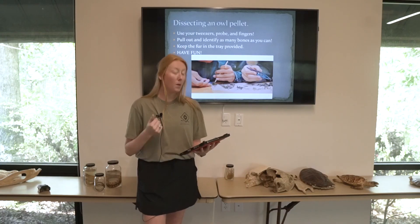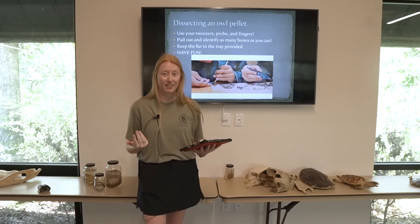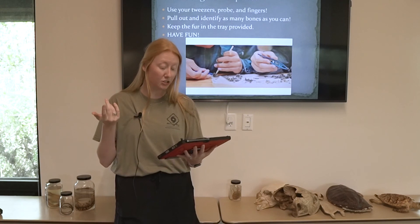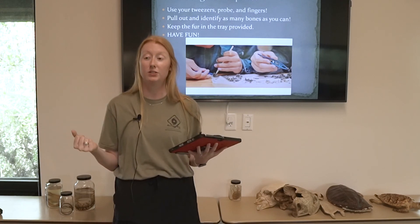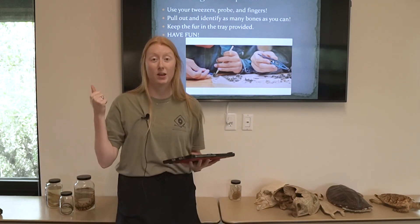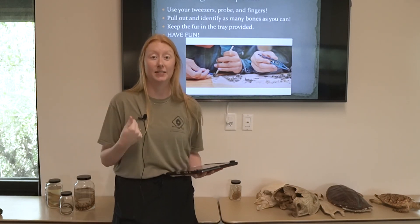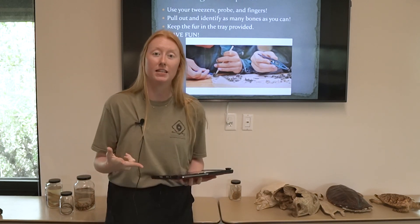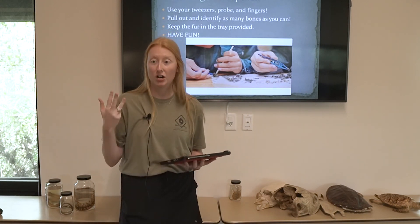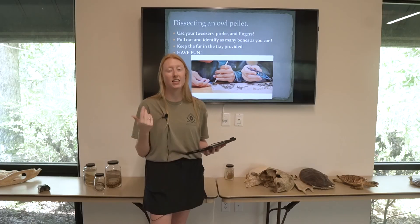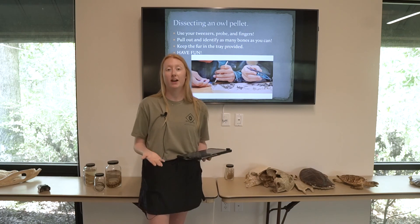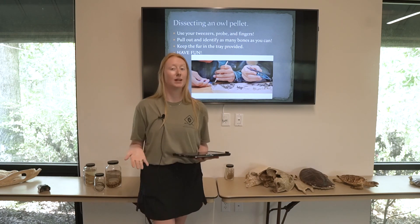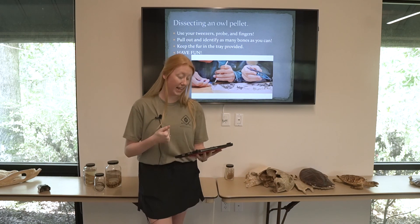So while we're dissecting the owl pellet, we'll obviously have gloves on. Essentially all we do is take it out of its wrapper and dig in to see what we can find — different types of bones, skulls, beaks, fur, scales, feathers, anything we can find. We'll observe all of that and try to determine what type of animal it came from.